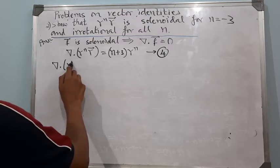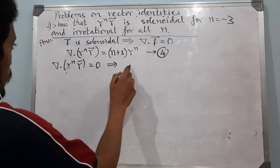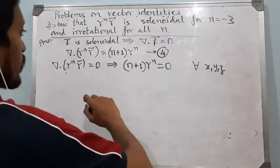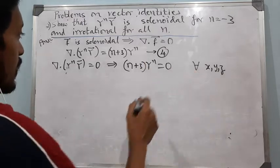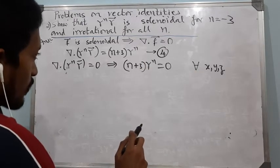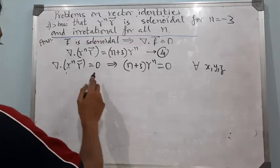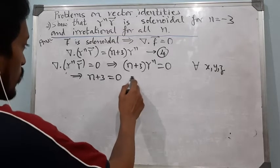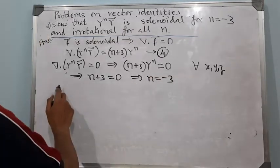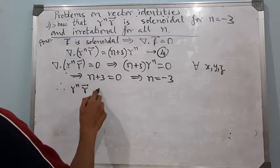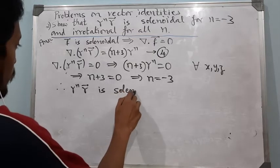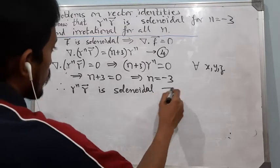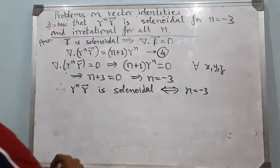Now divergence of rⁿ times vector r equals 0 implies (n+3)·rⁿ = 0. This must hold for all x, y, z, and r is magnitude of vector r, so r² = x² + y² + z². Since rⁿ cannot be 0 at all points, we have n+3 = 0, or n = minus 3. Therefore, rⁿ times vector r is solenoidal if and only if n equals minus 3.